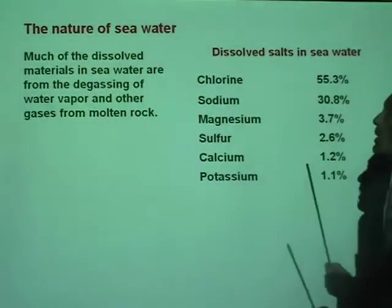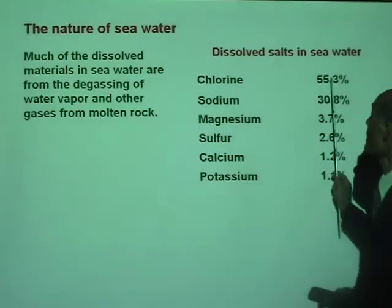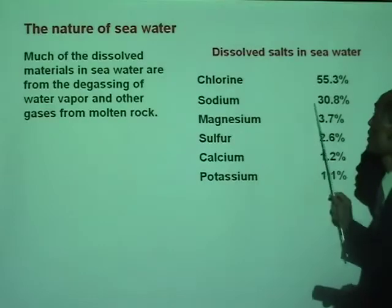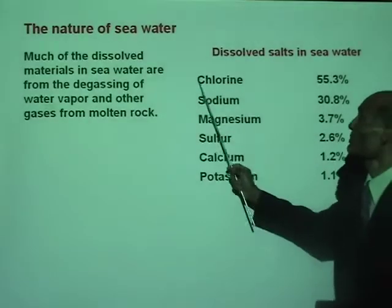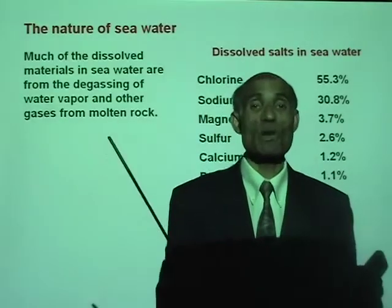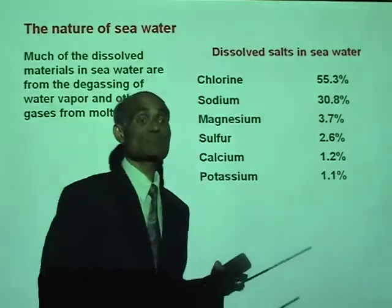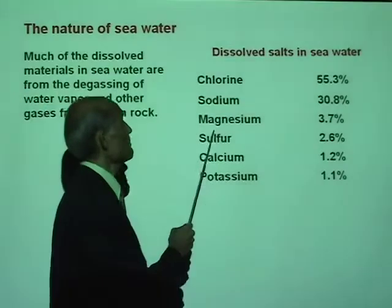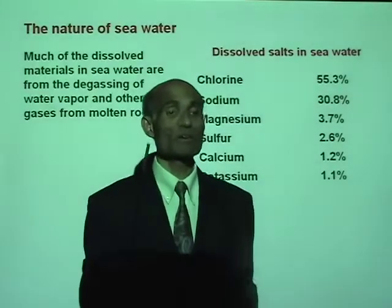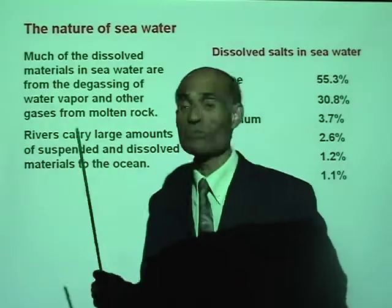Here is a table of some of the minerals dissolved in seawater. Chlorine makes up 55.3% and sodium 30.8% — so most of the dissolved minerals are sodium and chlorine, which together form sodium chloride, the salt. Then you have magnesium, sulfur, calcium, potassium, and many other minerals and chemicals dissolved in seawater.